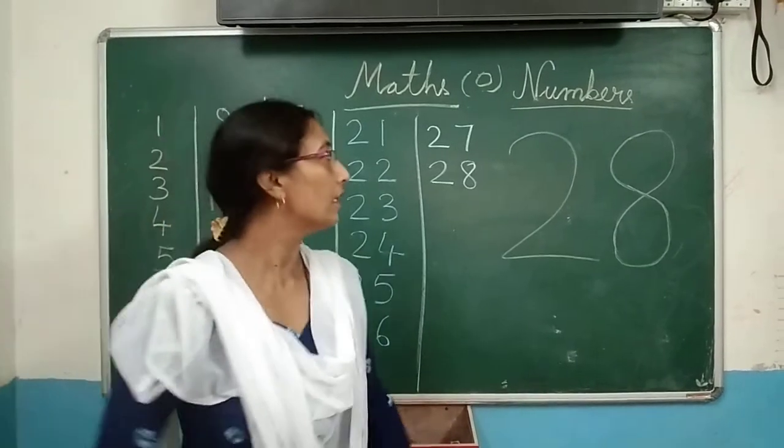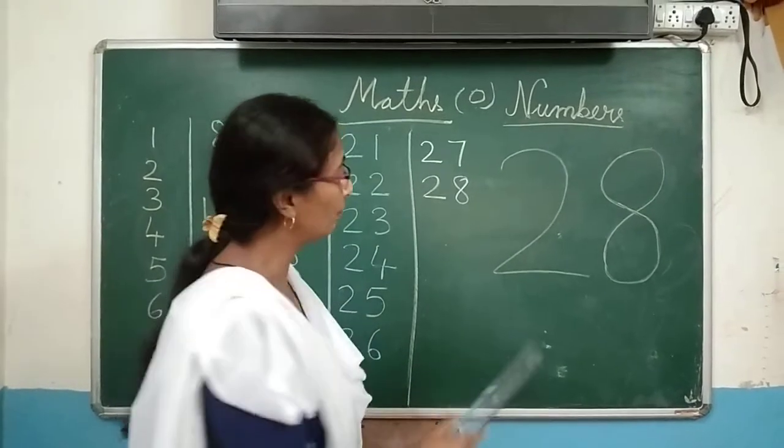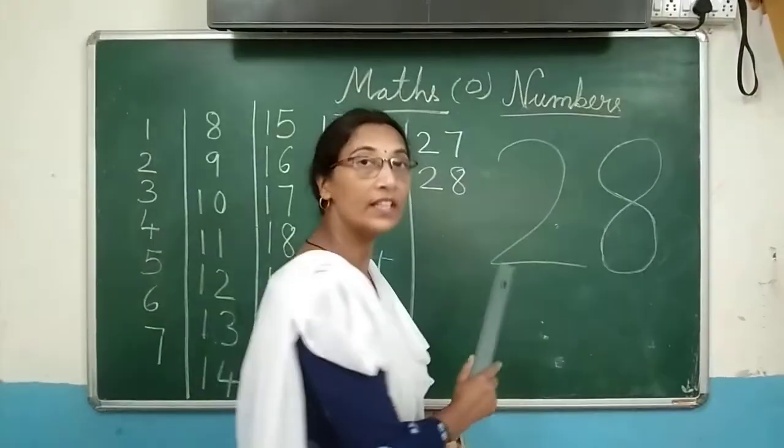And see, this number 2 and 8. It is 28. Which number it is? 2, 8. 28.